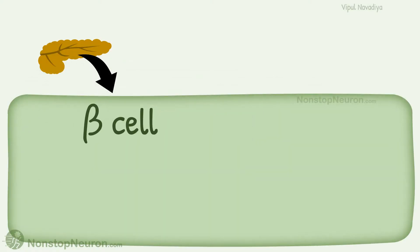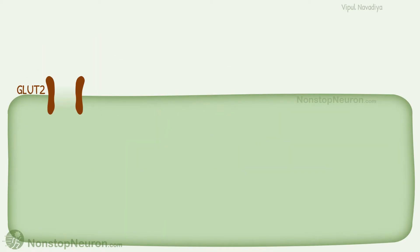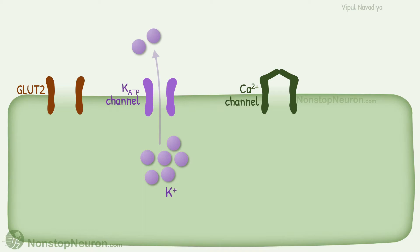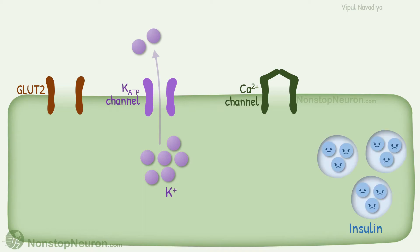Insulin is released from beta cells of the pancreas. Beta cells have glucose transporters, ATP-sensitive potassium channels through which potassium continuously moves out down its concentration gradient, voltage-gated calcium channels, and insulin stored in secretory vesicles.